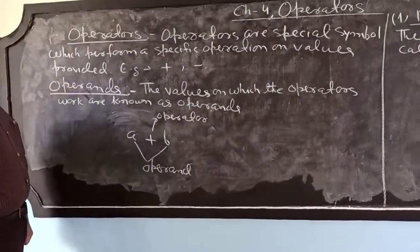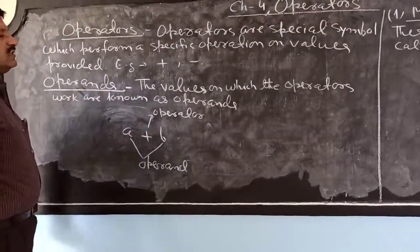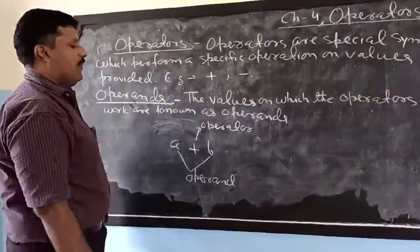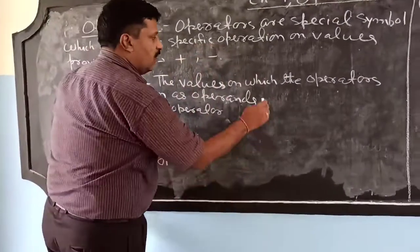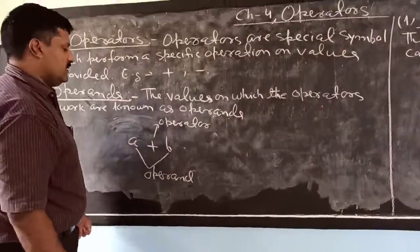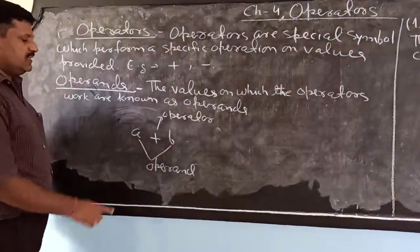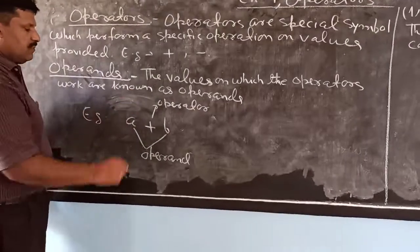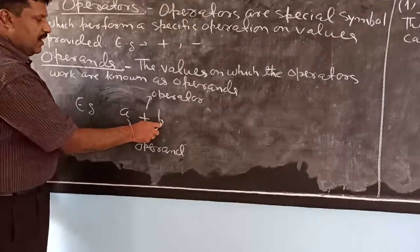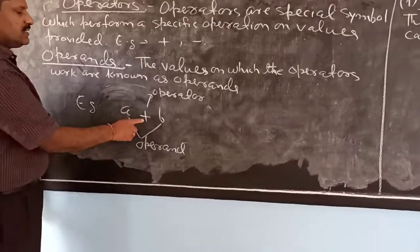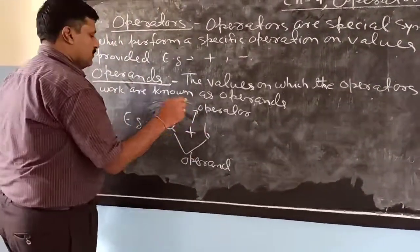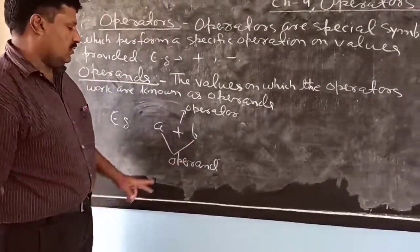Second comes operands. What are operands? The values on which the operators work are known as operands. For example, a plus b. Here, a and b are the operands and the plus sign is the operator. So this operator is working on a and b — these are the two operands.